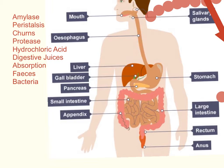One substance the liver makes is bile. Bile is stored in the gallbladder and released into the small intestine. What bile does is emulsify fats — the word emulsify means to break down larger droplets of fat into smaller droplets, and that helps the lipase enzymes break the fats down more quickly.